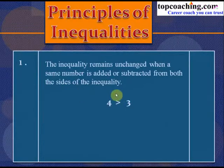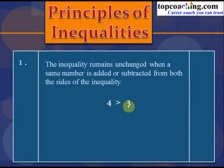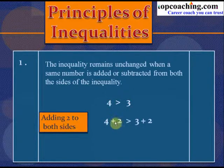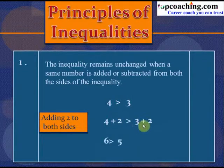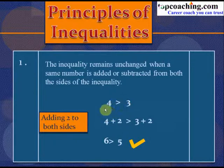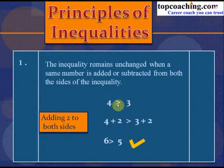For example, consider the inequality 4 > 3. If we add 2 to both sides, LHS becomes 4 + 2 = 6 and RHS becomes 3 + 2 = 5, giving 6 > 5, which is true. Adding the same number to both sides keeps the inequality the same — LHS remains greater than RHS.